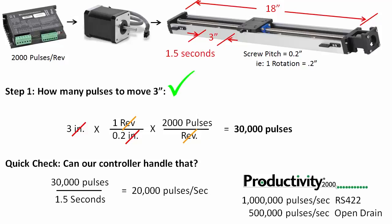So step 1 was calculate the number of pulses needed to make the move and then do a quick check to see if our controller can handle it.